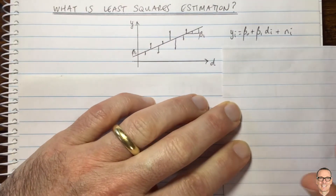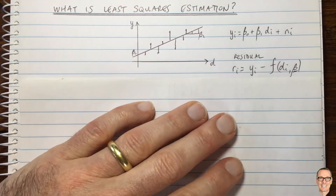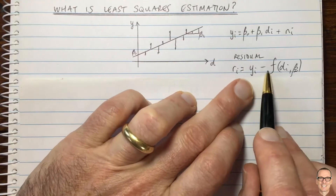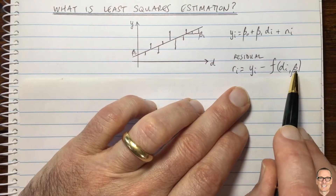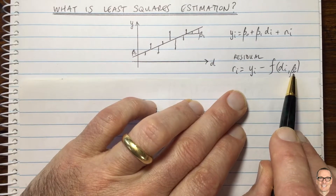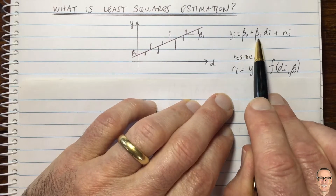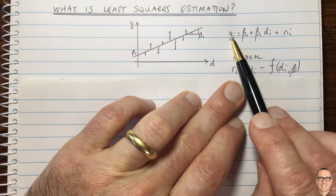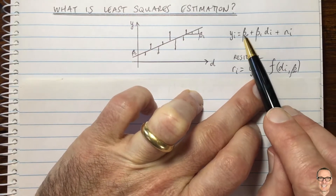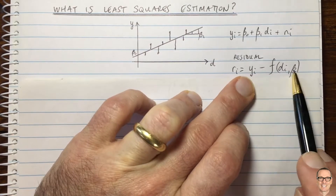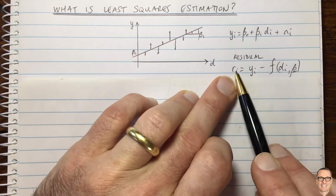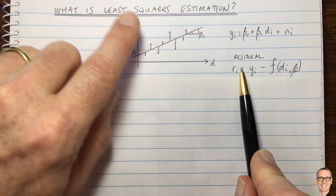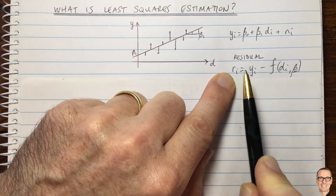We want to find b0 and b1 for the best slope and best y-intercept, and we're going to do that with least squares. The first step is to write down something called a residual. We take y — the vertical measurement — minus a function of the x-axis and the parameter vector beta (with a tilde underneath to indicate it's a vector of b0 and b1). This error term is y_i minus the function, in our case b0 plus b1 times d_i, and what you're left with is the disturbance term — we call it the residual. In least squares, we are going to minimize the square of the residual.